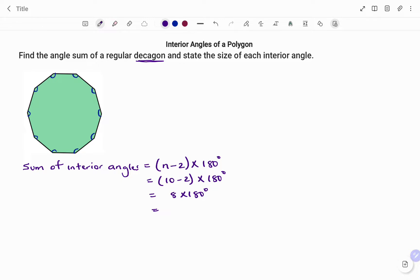10 minus 2 is 8 times 180. Therefore, the sum of the interior angles of the decagon is 8 times 180 degrees, that's 1440 degrees.